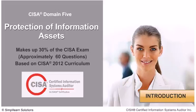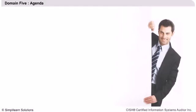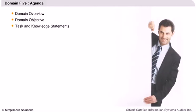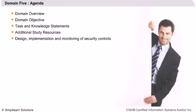Let's move to the next slide for a rundown of what we expect to cover in Domain 5. We will begin with an overview of Domain 5, which will involve getting an understanding of what Domain 5 is all about. This will be followed by a look into the objective of the domain. Domain 5 task and knowledge statements will highlight key aspects to be covered. A list of additional study resources is provided for further reading and referencing. Domain 5 content begins with a look into the design, implementation and monitoring of security controls.